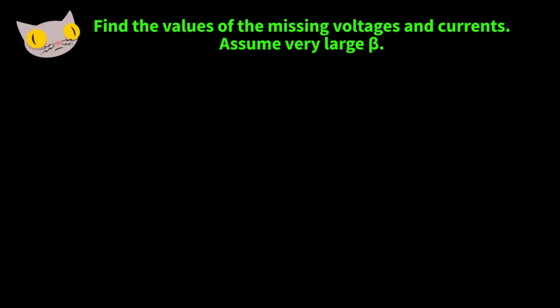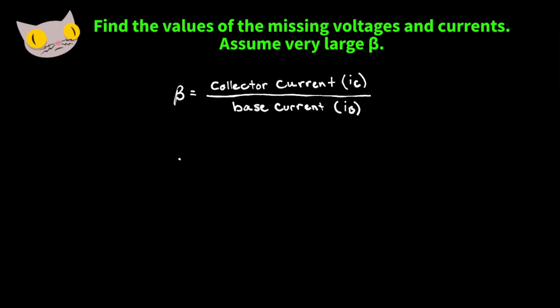In this video we're going to look at some transistor circuits and find some missing voltages and currents, assuming very large beta or common emitter gain. The common emitter gain is equal to the collector current IC over the base current IB. Because our beta is very large, we can assume the collector current is also very large, so the base current is negligible.